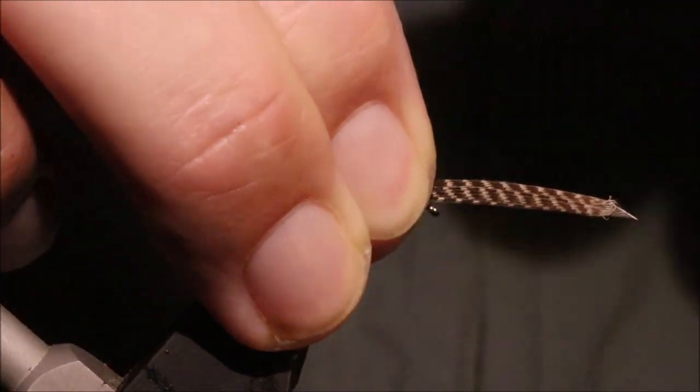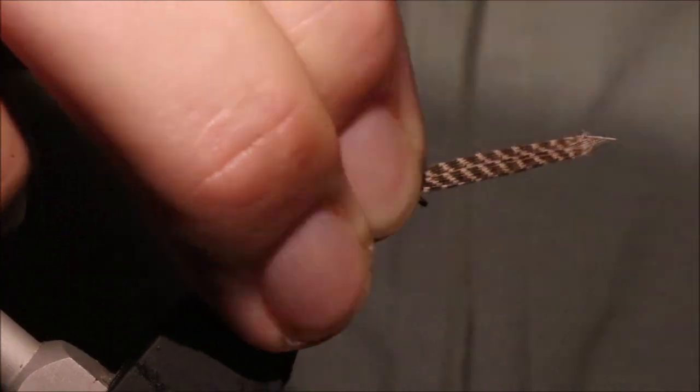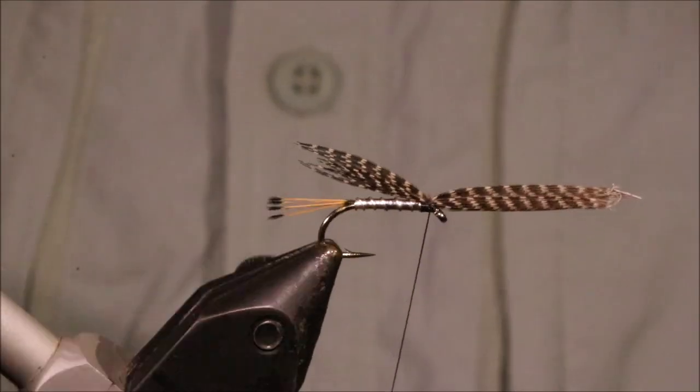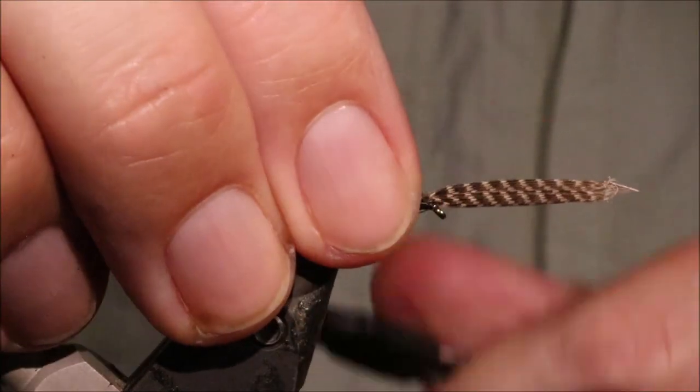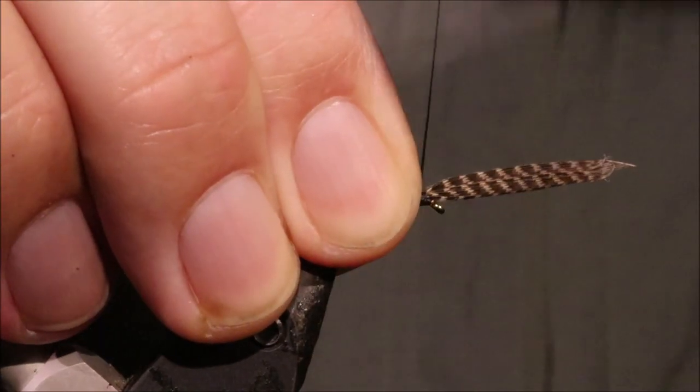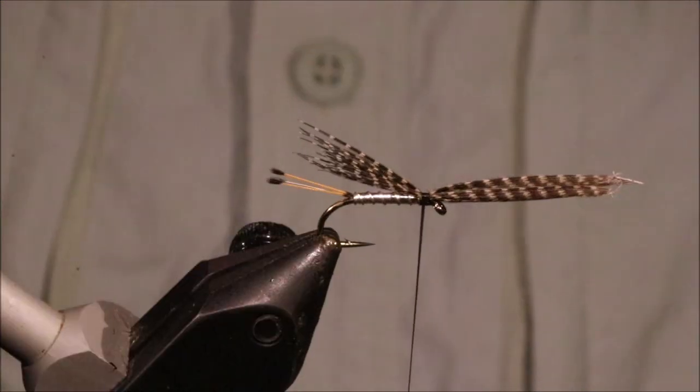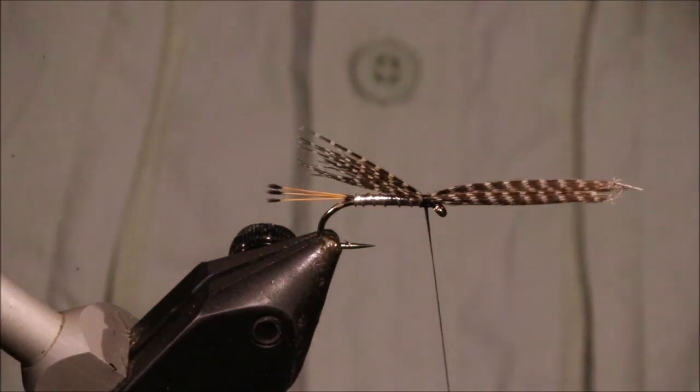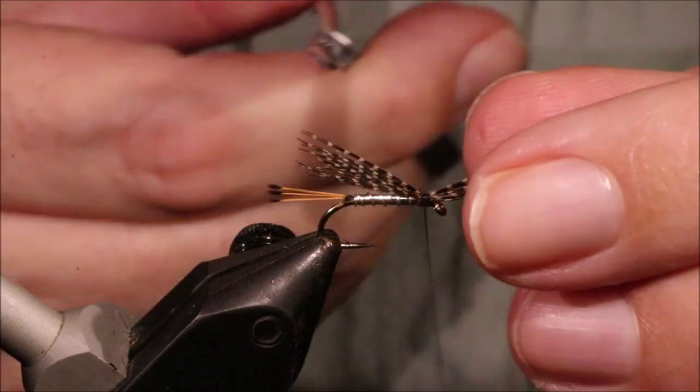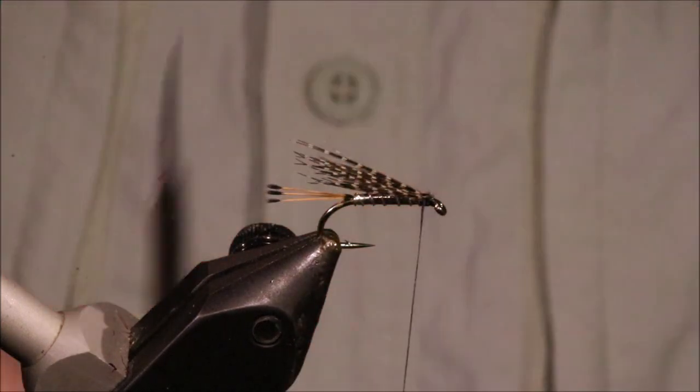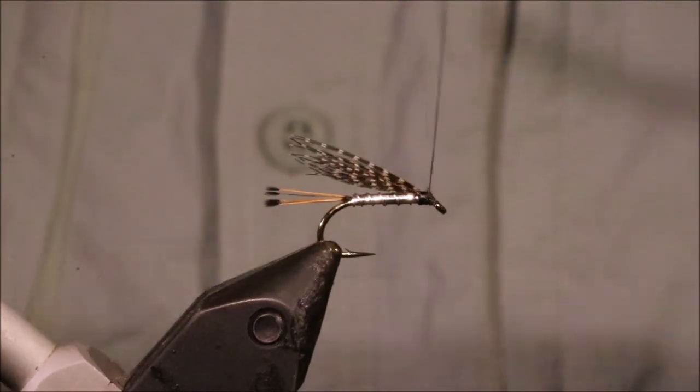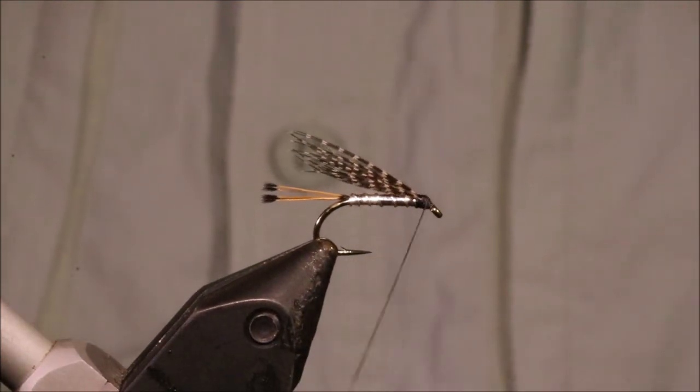So we'll just switch hands, pinch and loop, and another. We'll see how I'm sitting, that looks okay to me. So we'll just take another couple of turns just to lock everything in place. A bit of wax. Trim away your waste piece. And then, before you go any further, I like to tidy this up.